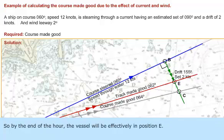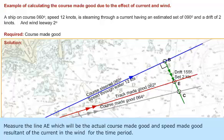So by the end of the hour, the vessel will be effectively in position E. Measure the line AE, which will be the actual course made good and speed made good resultant of the current and the wind for the time period.